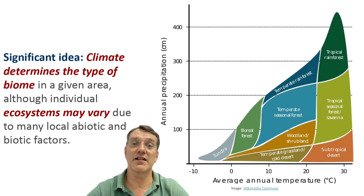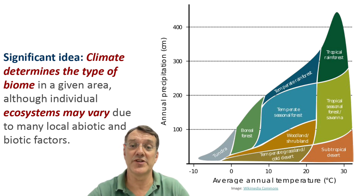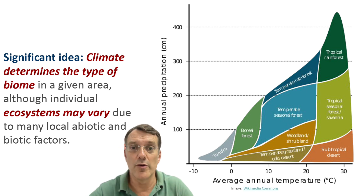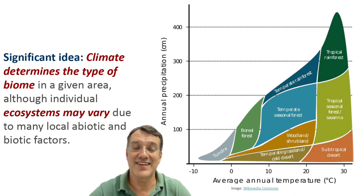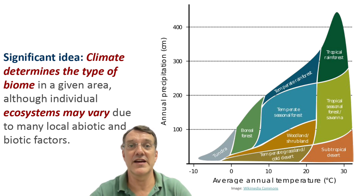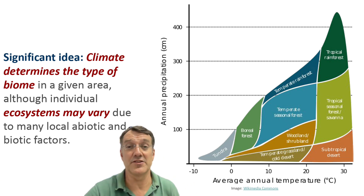The key concept for this topic is that climate largely determines what type of biome we find in any given area. This is illustrated in the graph showing average annual temperature and precipitation. Notice how different biomes occupy different regions of this climate space. While climate sets the stage, individual ecosystems within biomes can vary considerably due to local abiotic factors like soil type and biotic factors like the specific species found there.